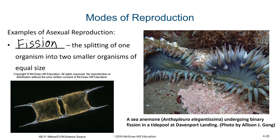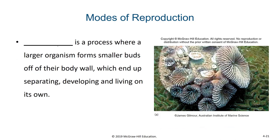Fission is just a little different than our next category, which is known as budding. Budding is a process where a larger organism forms smaller buds off of their body, which end up separating, developing, and living on their own as their own individuals. A big difference between fission and budding is that in budding you have your parent organism and small little buds form, whereas in fission that one parent organism simply divides into two equal smaller organisms.